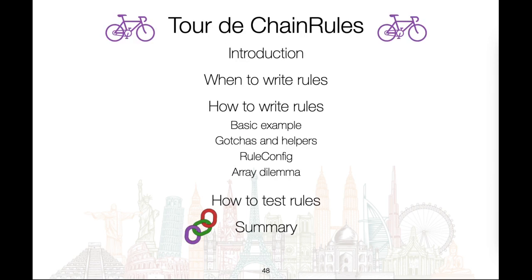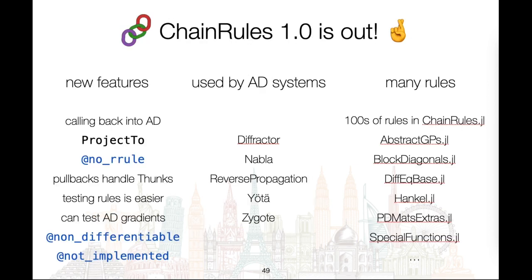Having looked at when to write rules, how to write rules, and how to test rules, it's time to wrap up. ChainRules 1.0 is out — a number of new features have been added since last year, ranging from solving bigger issues like calling back into AD and the array dilemma, to quality-of-life improvements such as convenient macros for writing rules and improved testing. ChainRules is now also integrated into a number of AD systems, and there are plans to get others involved. There are hundreds of rules written by a dedicated community making your models train — and train faster.